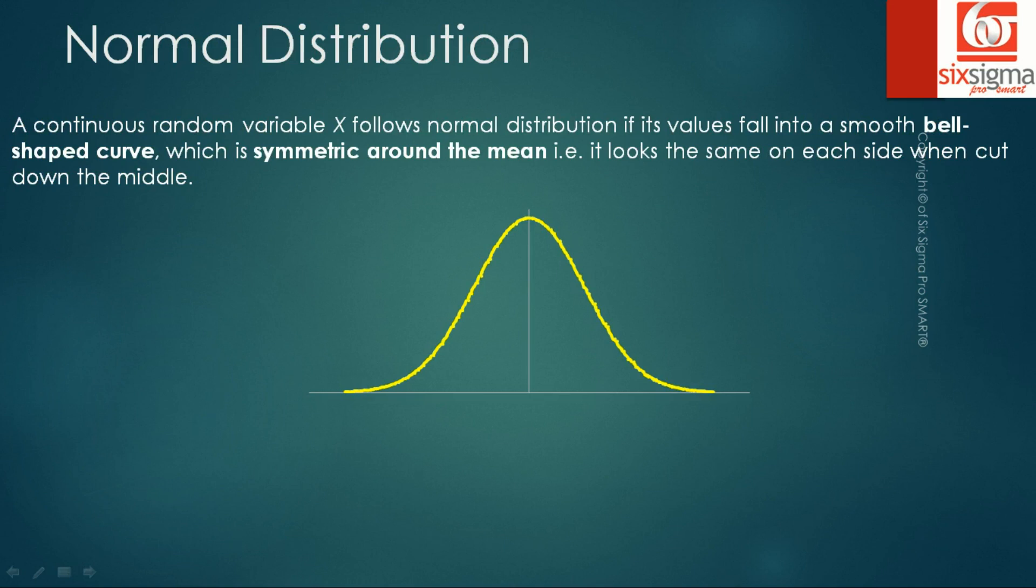Now let's talk about normal distribution. A continuous random variable X follows normal distribution if its values fall into a smooth bell-shaped curve which is symmetric around the mean, that is, it looks the same on each side when cut down in the middle. As you can see in the picture itself, the area on both the sides is same, the shape on both the sides is pretty much the same. It is a continuous distribution which means it can attain infinite possible values. Normal distribution is characterized by its mean μ and standard deviation σ. The middle line which divides the curve into two halves is μ or the mean, and standard deviation determines the shape of the curve.